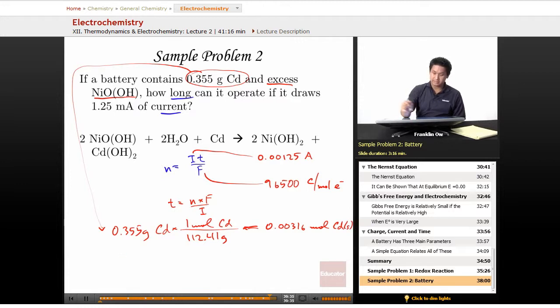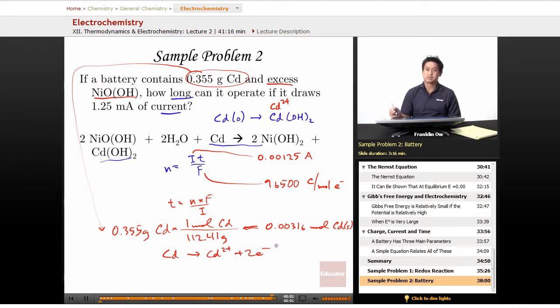The redox reaction is right here. That's cadmium 0 going to cadmium hydroxide, and in this reaction, cadmium is 2+. So for cadmium to go to cadmium 2+, it's got to give up two electrons, so my mole-to-mole ratio of the electrons to cadmium is a two-to-one ratio. So 0.00316 moles of cadmium times 2 moles of electrons for every 1 mole of cadmium.